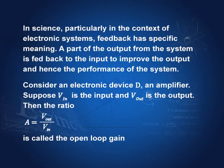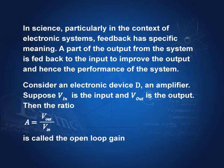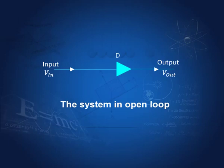In science, particularly in the context of electronic systems, feedback has a specific meaning. You remember that in science, work has a specific meaning — work in ordinary language is different from work in physics, where work is done only when there is a movement in the direction of the force. Similarly, feedback in science has a different or specific meaning: we take a part of the output and feed it back to the input so that the output can be controlled or improved. In a system where there is no feedback — input through the device and output — this is known as open loop. The voltage gain is V_out by V_in, and A is called the open loop gain.